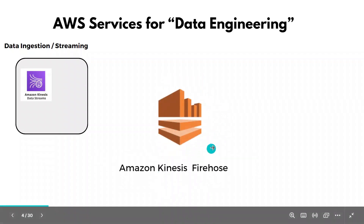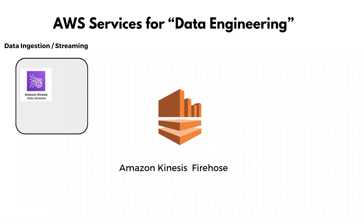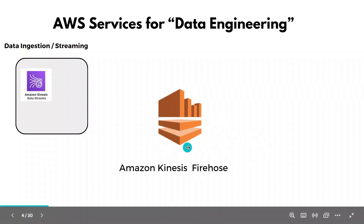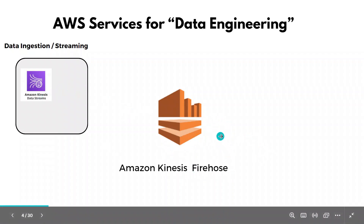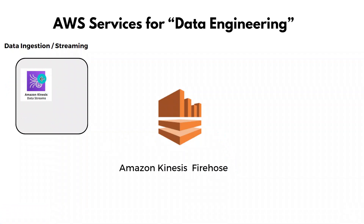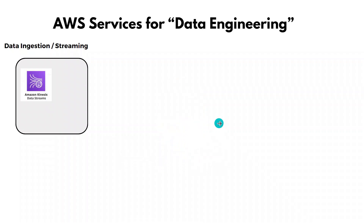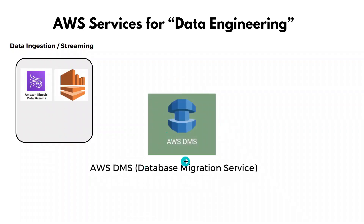The next service is Amazon Kinesis Firehose. If you have real-time data which needs to be ingested and sent to a particular destination like S3 or any other database, you can use Amazon Kinesis Firehose. The main difference between Kinesis Data Streams and Kinesis Firehose is that Kinesis Data Streams is used to stream and process data in real-time, whereas Kinesis Firehose is used to stream real-time data into a particular destination.